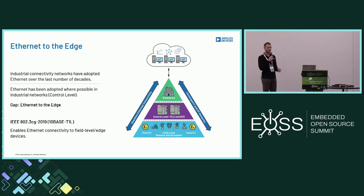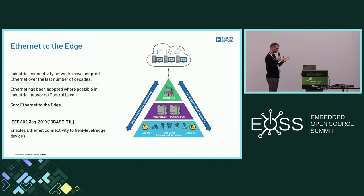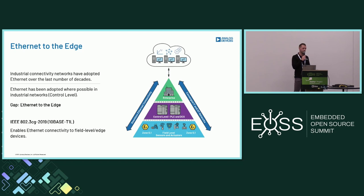I'm sure everyone is familiar with industry 4.0 — the digitalization of industrial, factory, and building automation environments. There's a demand for more interconnected devices and data-driven decision making. Industrial networks play a very important role, and over the last number of decades ethernet has been adopted in these networks as a standardized communication technology — primarily at the backbone, at the control level and enterprise level. A gap existed in bringing ethernet to the edge, and so in 2019 the IEEE ratified the 802.3cg standard for TenBase T1L single-pair ethernet, a new physical layer standard enabling ethernet connectivity to edge devices.